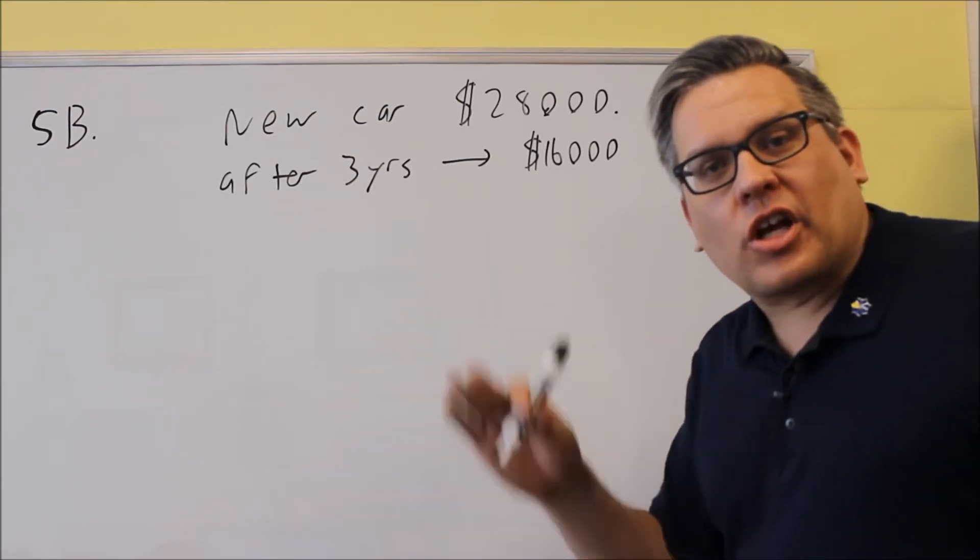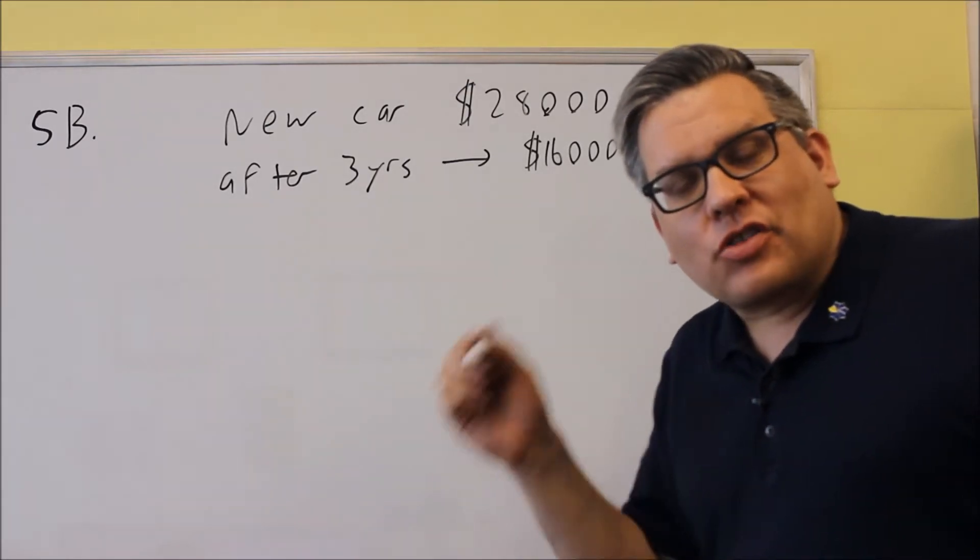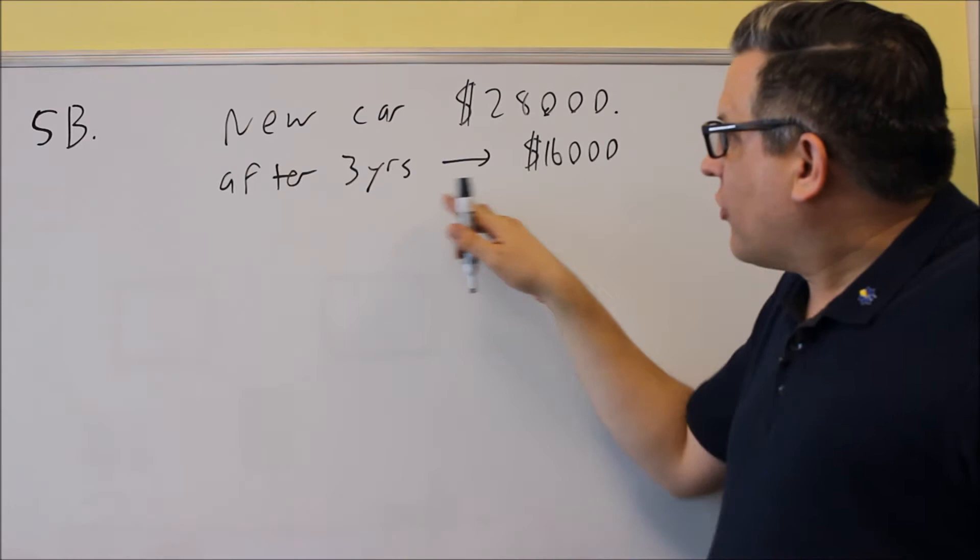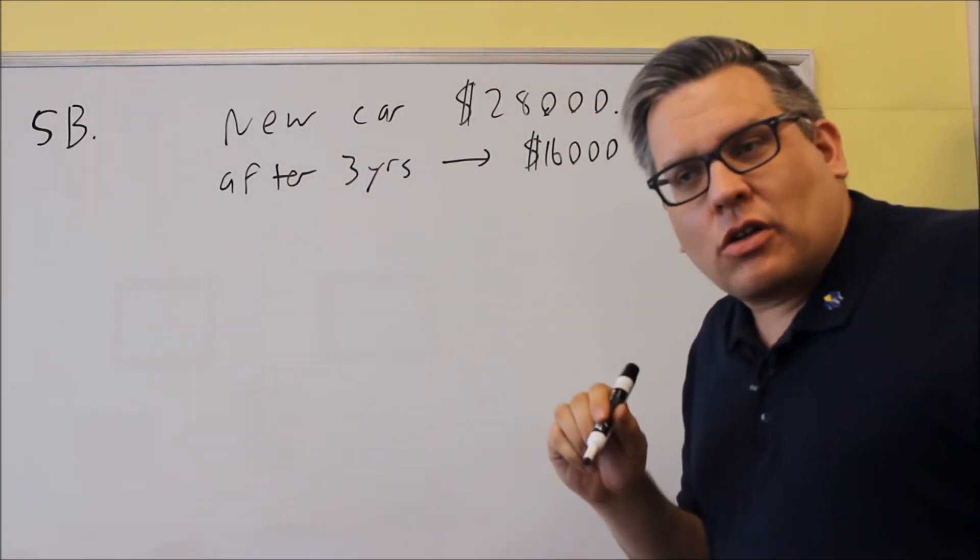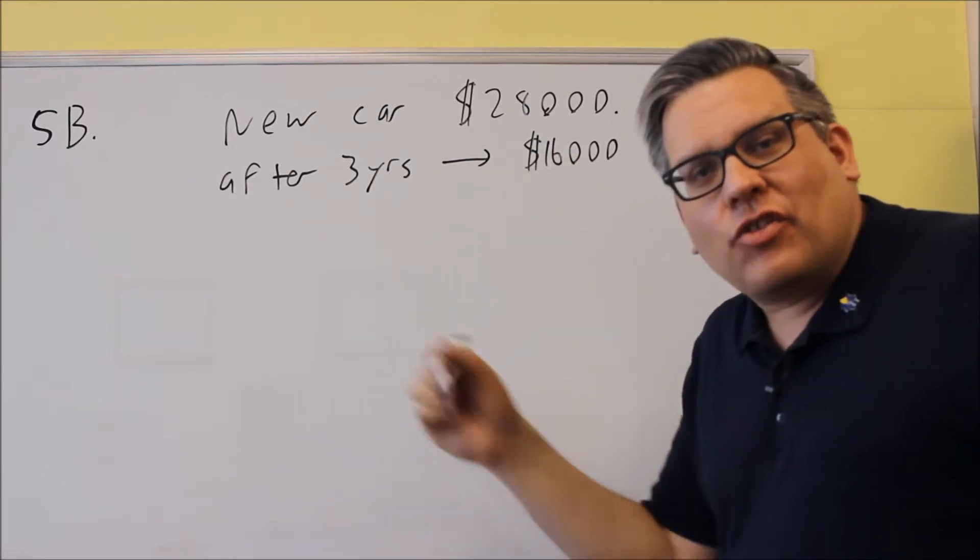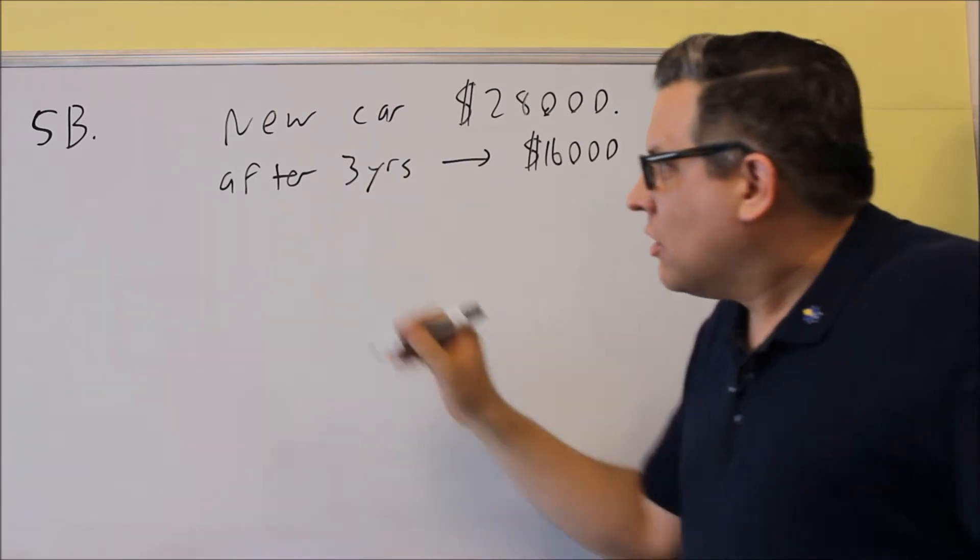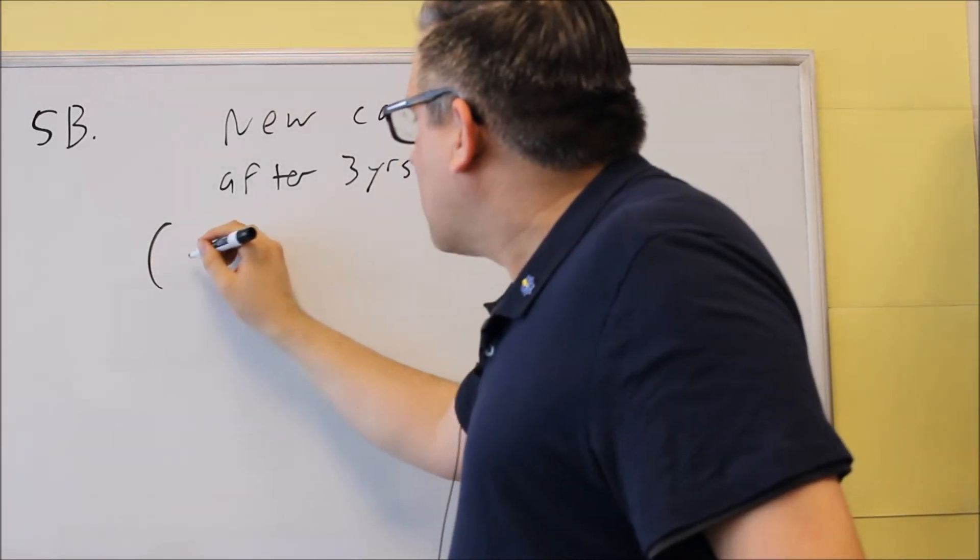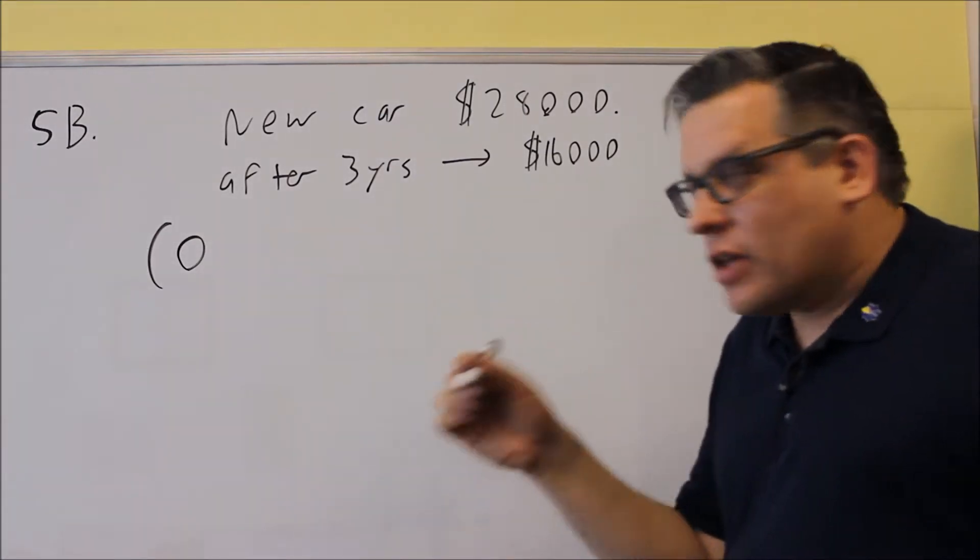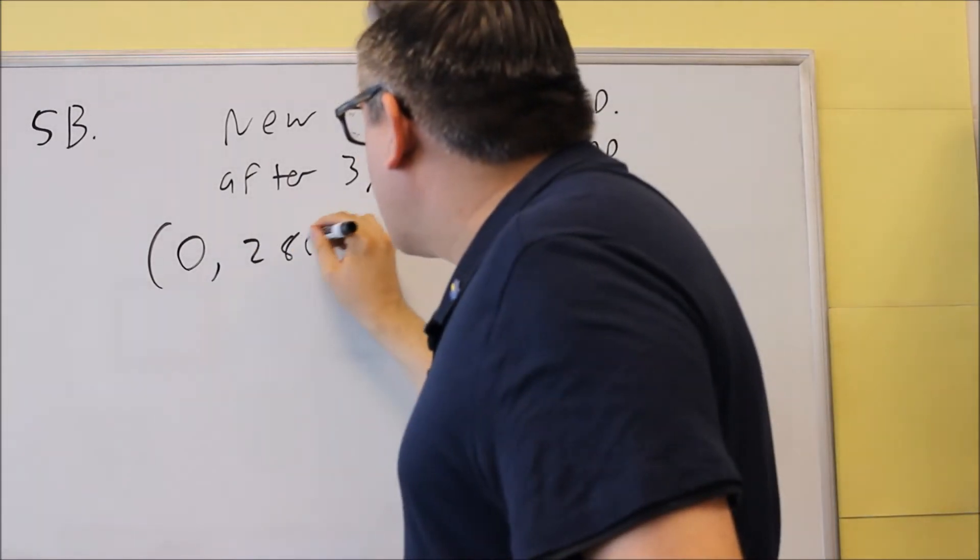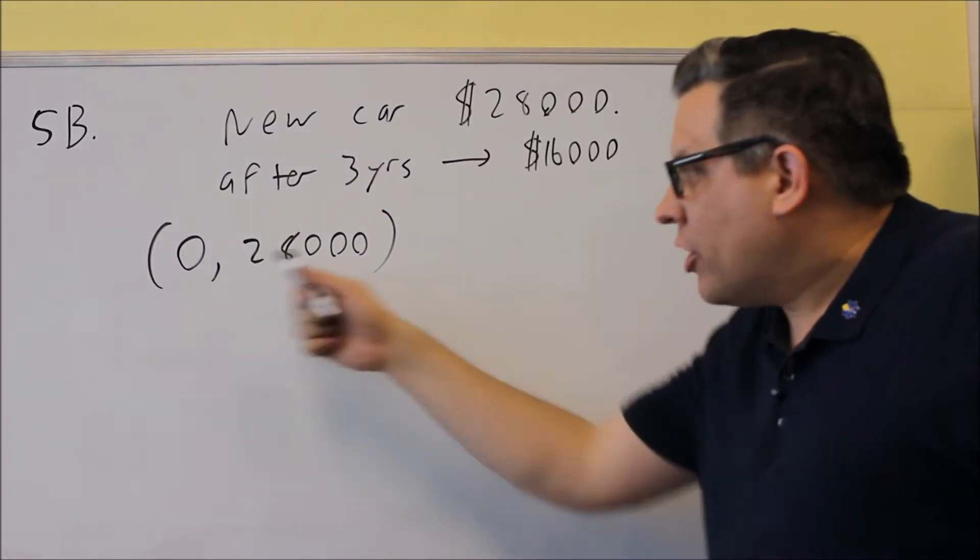We're going to set up two points and use the slope formula to find the slope. If T represents the X value and V is the Y value, let's set up points based on this. When the car is brand new, zero years have passed. So at zero years, we have $28,000. Input and output.